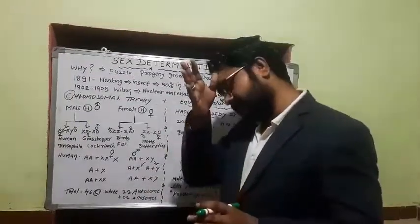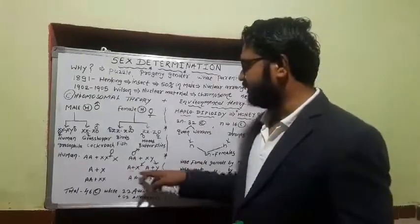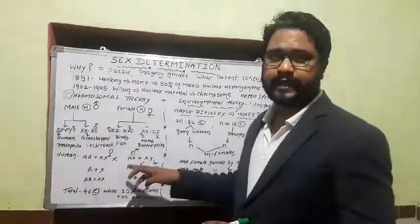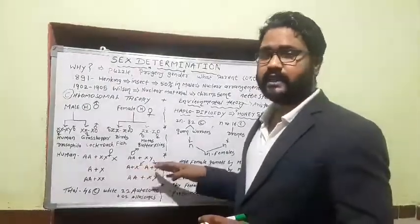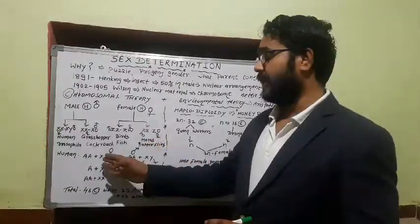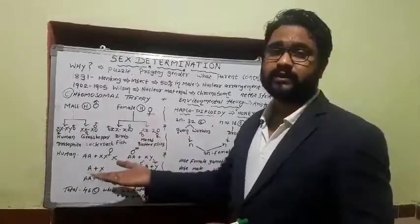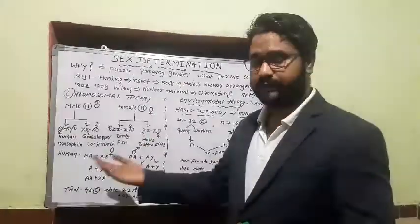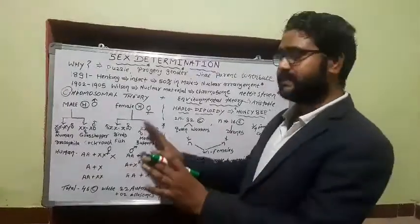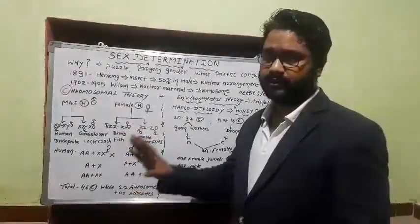This is simple Mendelian inheritance — nothing to be confused about. Two different types of gametes are shown for the male parent, A+X and A+Y, because XY is heterogametic. The female produces only one gamete type because XX is homogametic. So in humans: 46 chromosomes, 23 pairs, 22 autosome pairs, and one sex chromosome pair — the allosome.